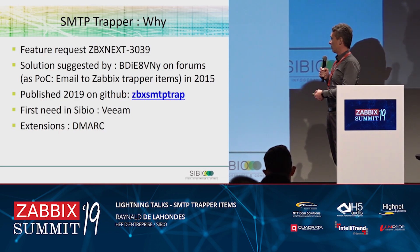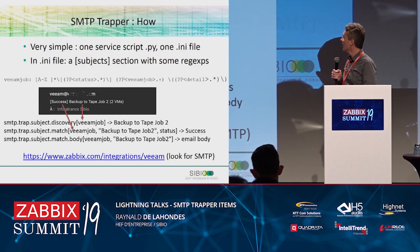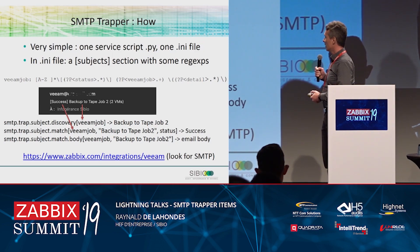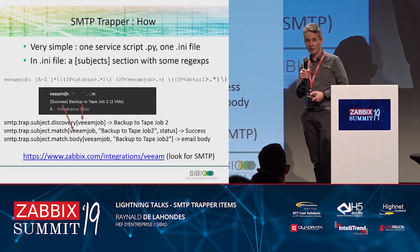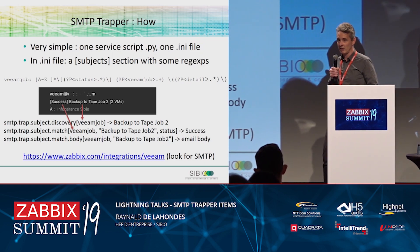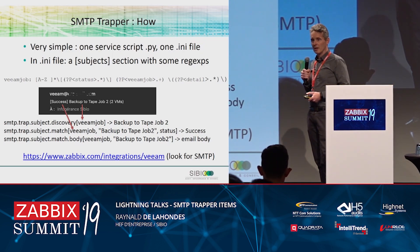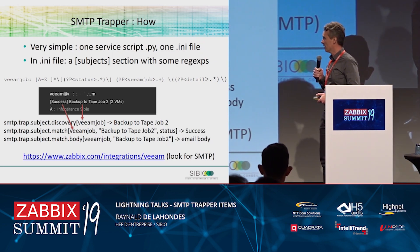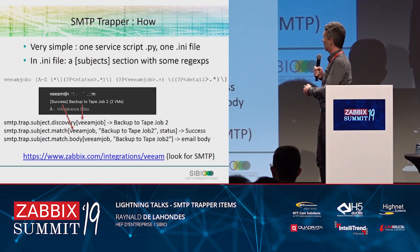We actually use it for Veeam and we want to use it for DMARC. How does it work? It's very simple — it's one single Python script. It has a few dependencies, but there is a requirements.txt so you can pip install everything you need. It uses Zabbix sender to send the data, so it's really lightly connected to Zabbix. Very simple.